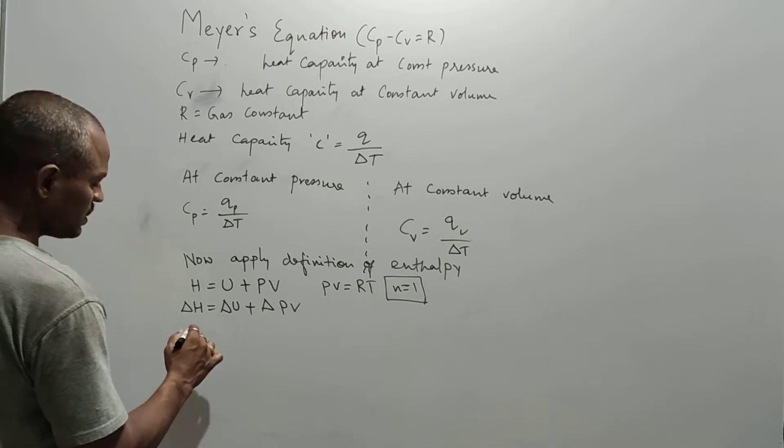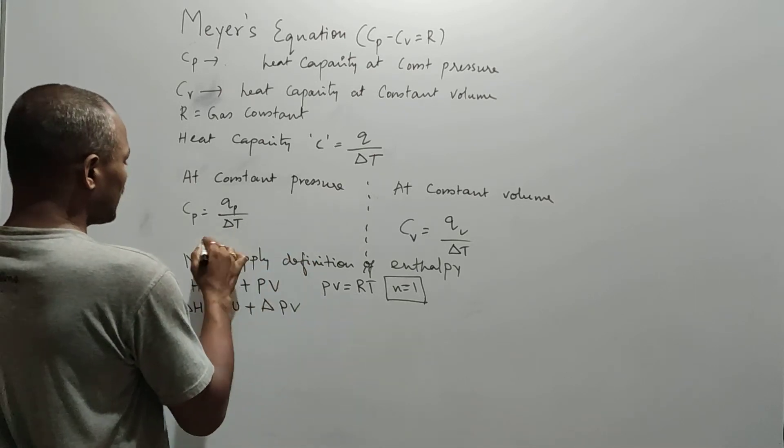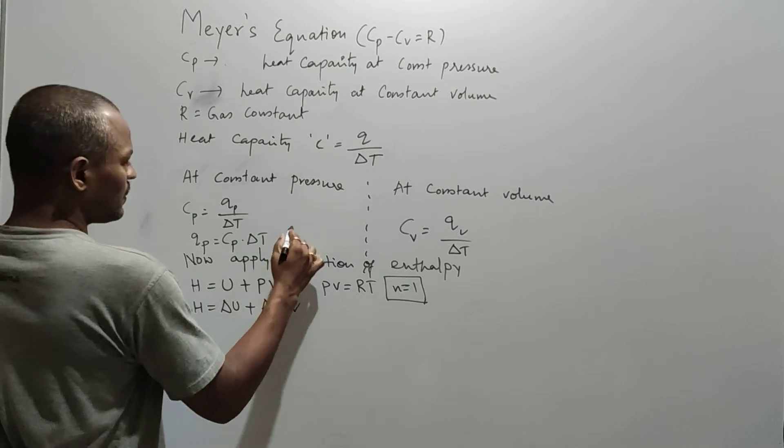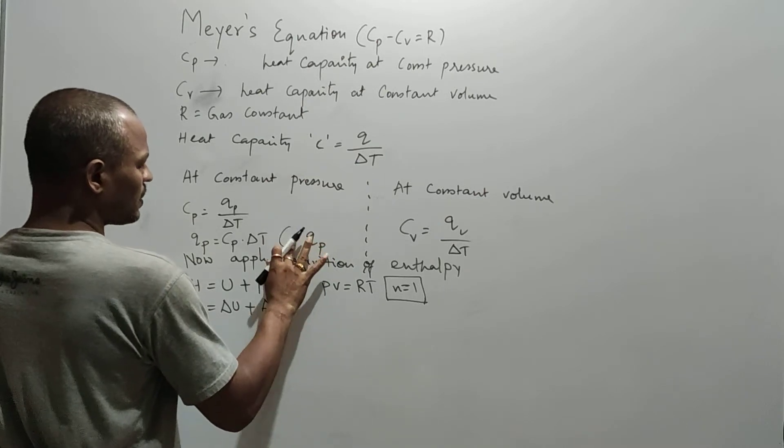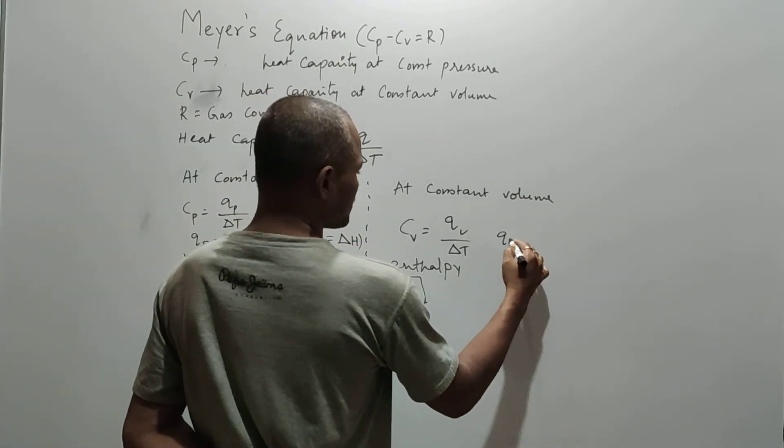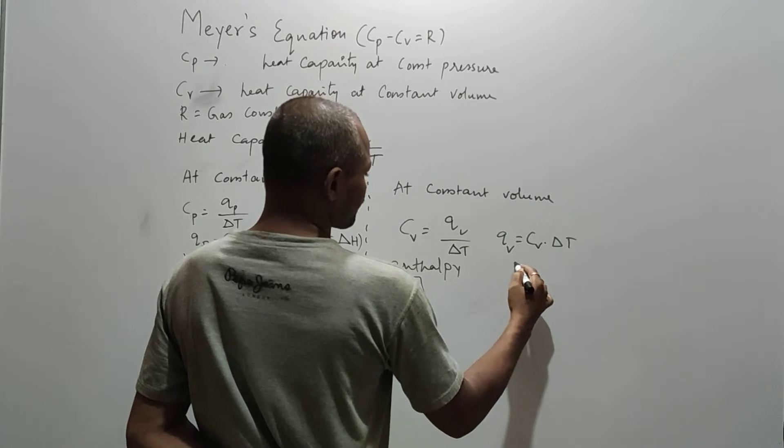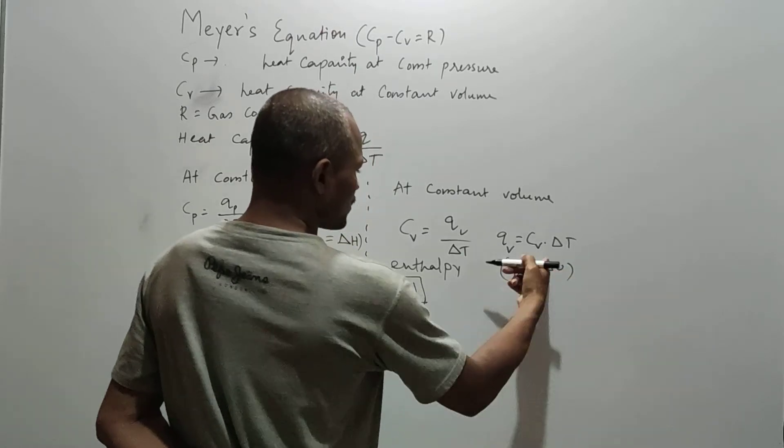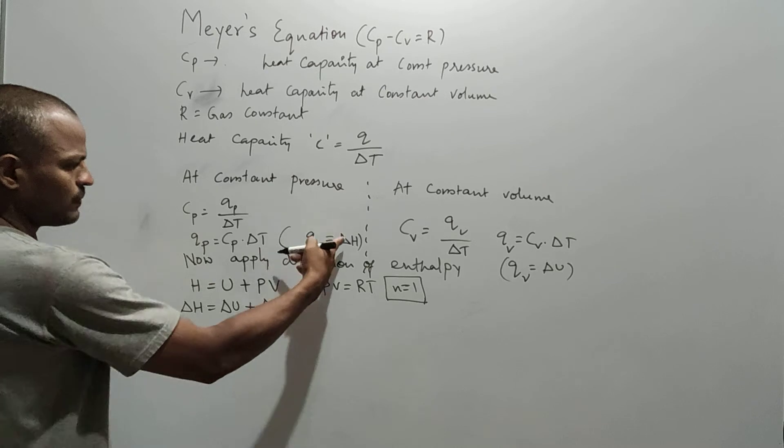Now, here we know that in the process I can rewrite the same, the above expression. Here Cp into del T. As per the equation, the Qp or let me take out, Qp equals del H. And here also same thing. That means Qp equals Cp into del T. Here the Qp. So now I'll apply the same equations.